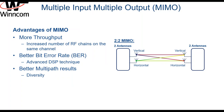So let's have a look at the advantages of a MIMO system. We will definitely get more throughput by doubling or increasing the number of RF chains. We will get better results because we are using advanced DSP techniques to process the signal. And we will obviously get better multipath results because of the diversity of the antennas.